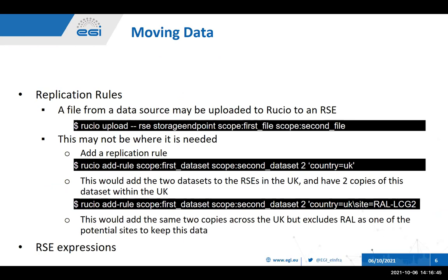Now let's talk about replication rules — actually moving your data around. A rule protects the data from deletion but also allows for replication across the different storage endpoints, or RSEs. If you've created some files with your experiment, you may wish to do an upload. Ruscio will then register these files within its database and set a rule for them, making sure that they're not deleted. These may then be added to a dataset later. Not all users might be at the same site as yourself, so they can come along with their own accounts and add rules to those datasets. They will use Ruscio add-rule and move the data to wherever they wish — so that might be their site, their RSE, so it's more local to them.